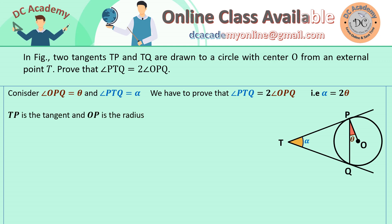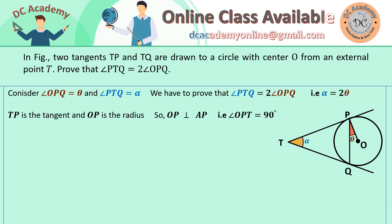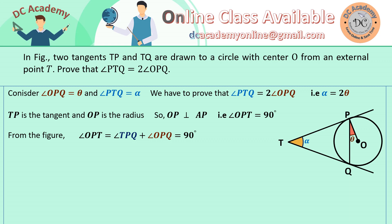Since TP is the tangent at point P and OP is the radius, we know that a tangent is always perpendicular to the radius. Therefore, the angle OPT is equal to 90 degrees. From the figure, the angle OPT equals the angle TPQ plus the angle OPQ, and their sum must equal 90 degrees. Since the angle OPQ is theta, the angle TPQ is 90 minus theta.